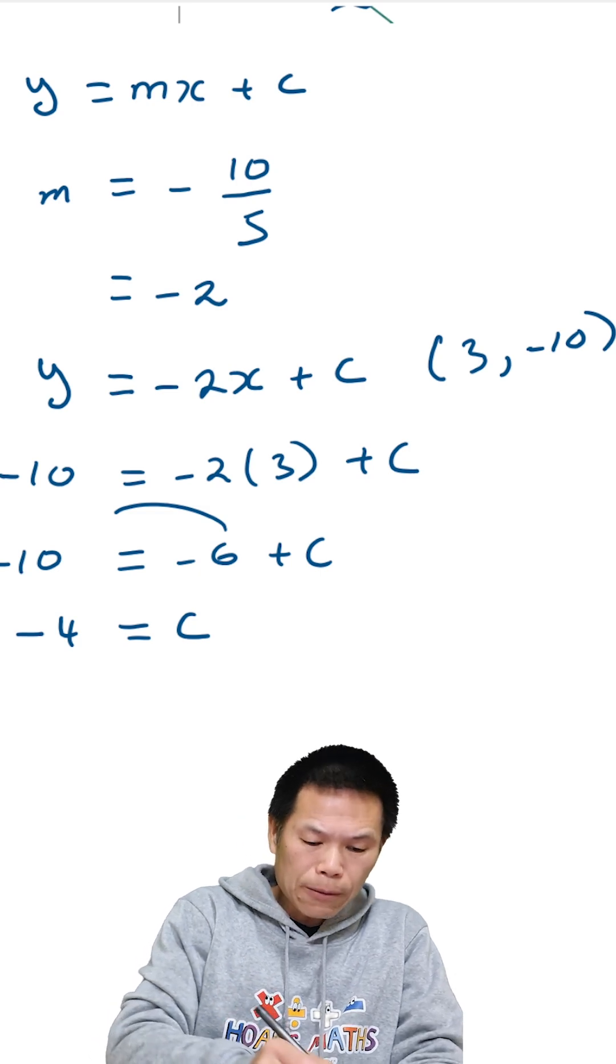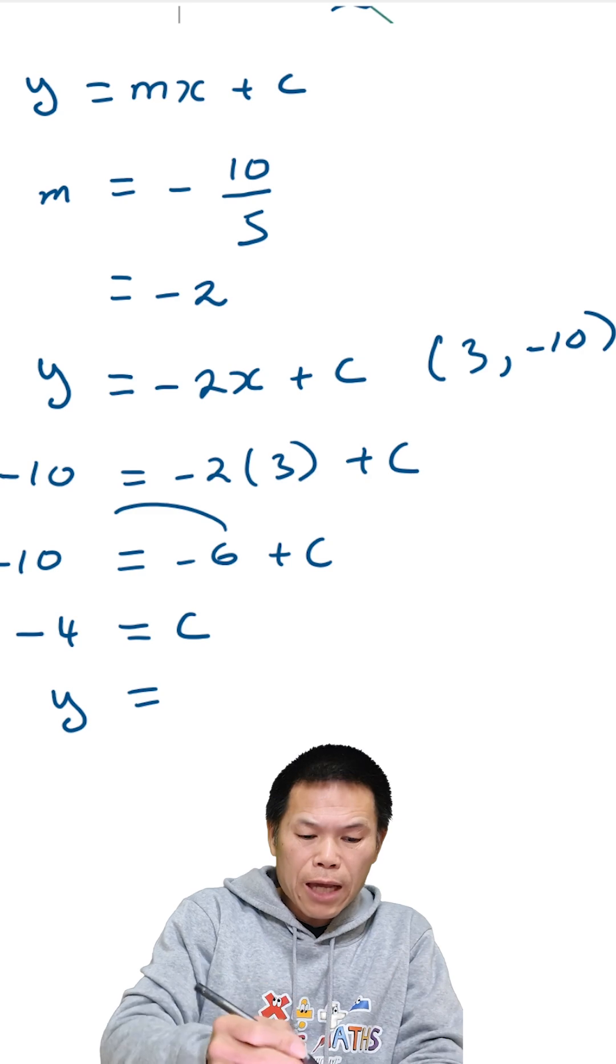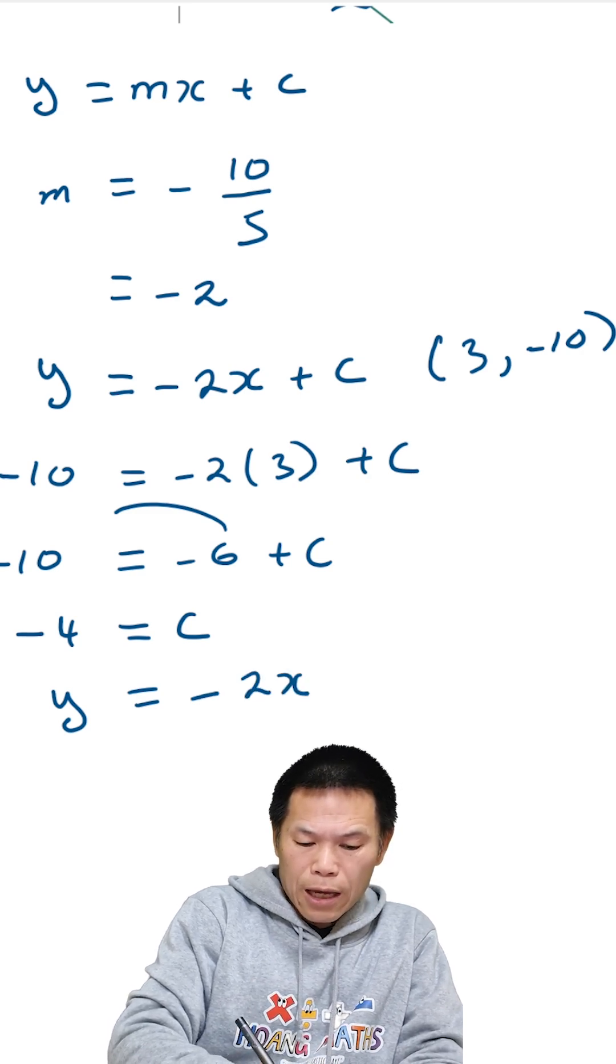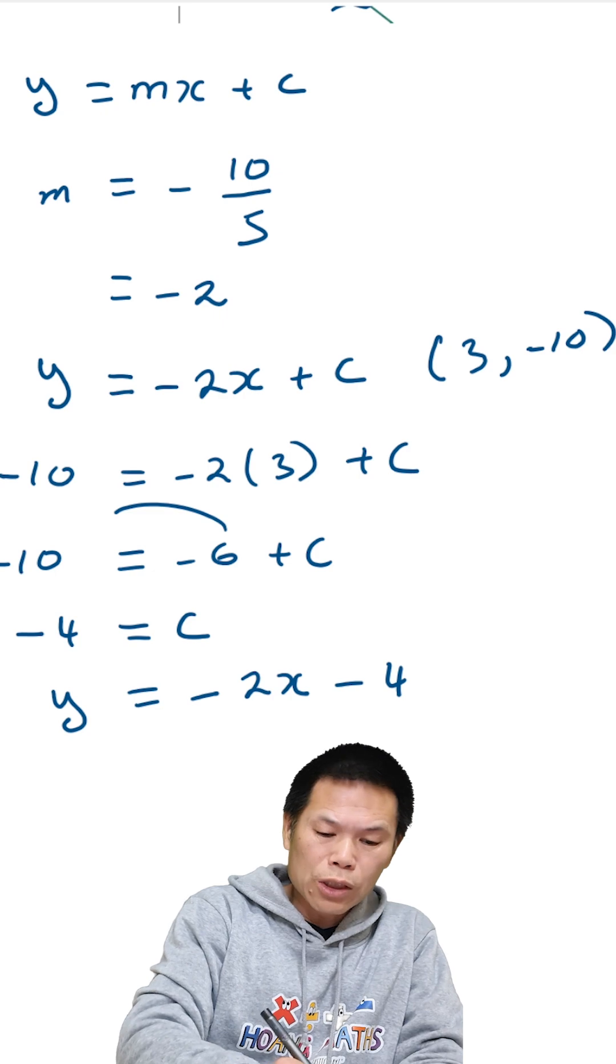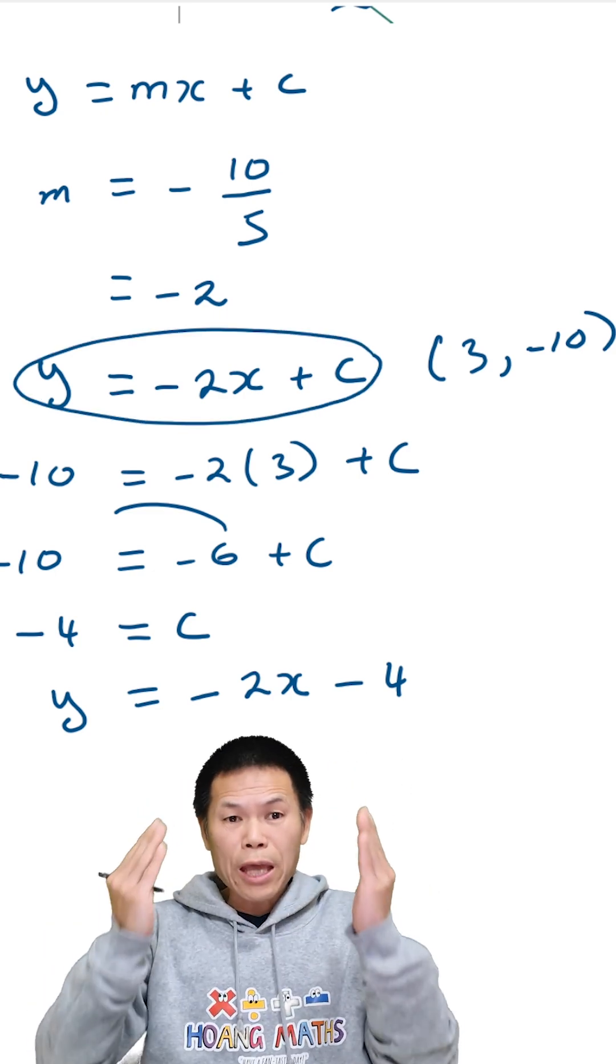So that is y is mx, so m is negative 2 already, so negative 2x, and then minus 4, which is substitute into this equation. So this equation, so there you go.